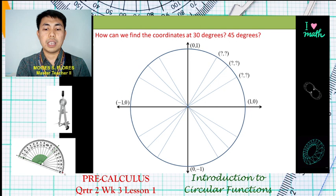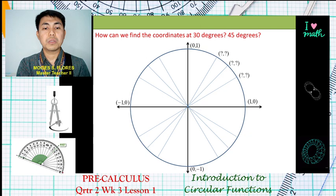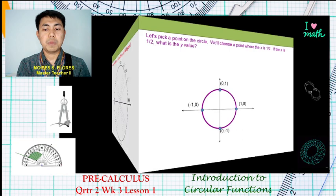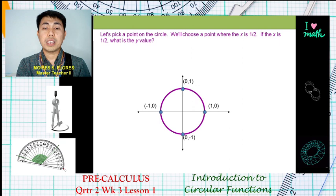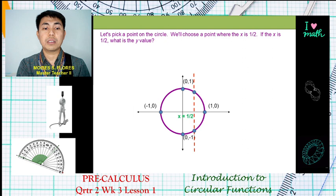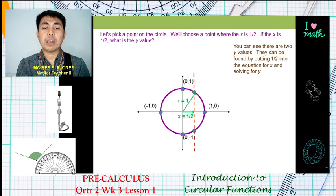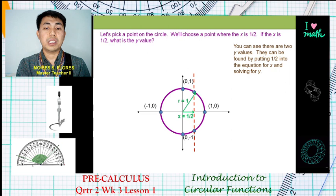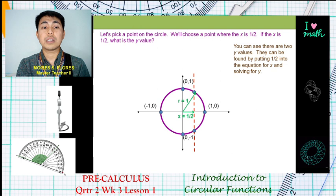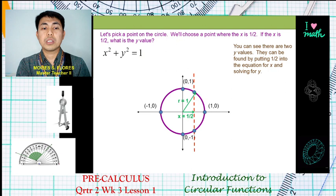The question is: how can we find the coordinates at 30 degrees or 45 degrees? Let us pick a point on the circle where x equals 1/2. If x is 1/2, what will be the value of y? Our radius r is 1 because it is the unit circle. We recall the standard form for the equation of a circle: x² + y² = 1.